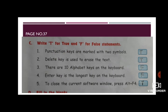Part C, true and false. Write T for true and F for false statement. First is punctuation keys are marked with two symbols, true. Second, delete key is used to erase the text, true. There are ten alphabet keys on the keyboard, false.